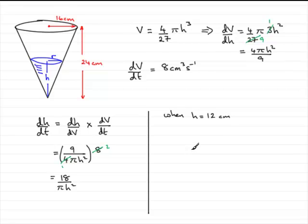So 12 centimeters. We just need to put h = 12 into here. So therefore, dh/dt is going to equal 18/(π × 12²).